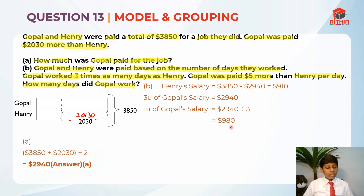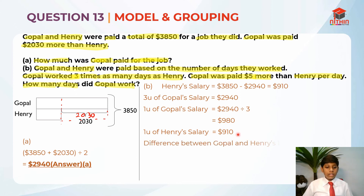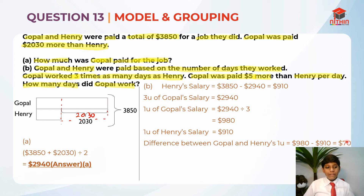Now we can apply the grouping concept. First, we find the difference between one unit of Gopal's salary and one unit of Henry's salary. One unit of Gopal is $980 and one unit of Henry is $910. So we take $980 − $910 = $70.